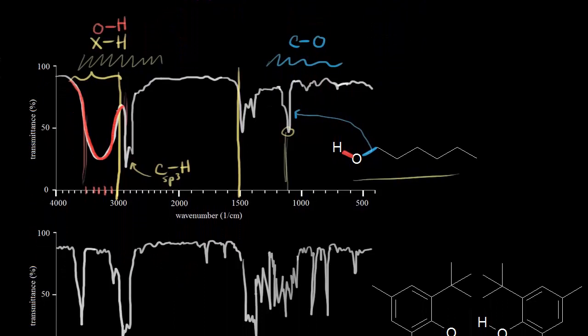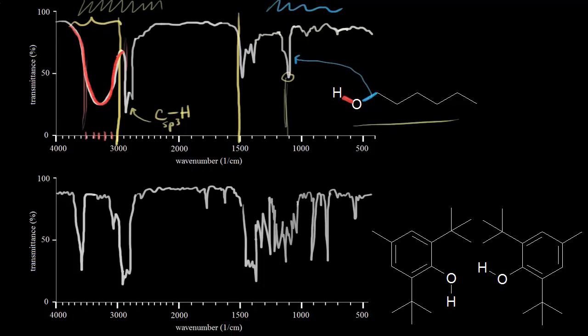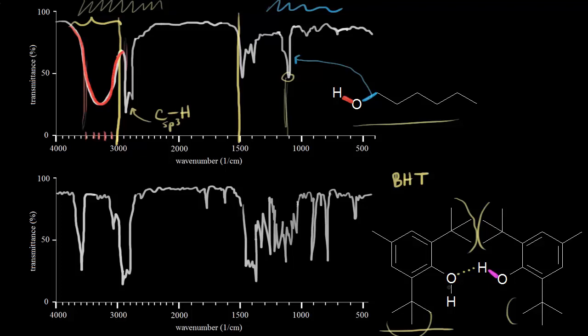Let's compare this alcohol to another molecule: butylated hydroxytoluene, or BHT. Two BHT molecules are shown. You might think there's another opportunity for hydrogen bonding here, giving a broad signal for the O-H bond. But in this case, there is so much steric hindrance from these tert-butyl groups — large groups on both sides — that prevents hydrogen bonding from taking place. Because of steric hindrance, these molecules can't get close enough to each other for hydrogen bonding to occur, so we don't get any hydrogen bonding.